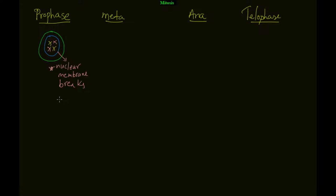Before moving on to metaphase, I want you to understand this. You can see there is a chromosome — this is a single chromosome. These single lines are your chromatids. Two chromatids join together to make a chromosome. Between the chromatids there is a centromere — they are joined by a centromere.